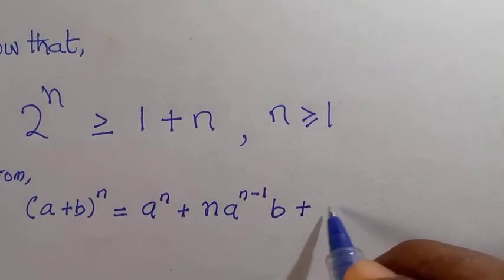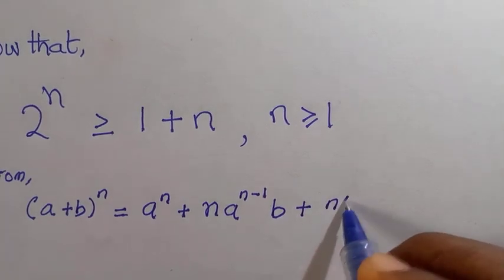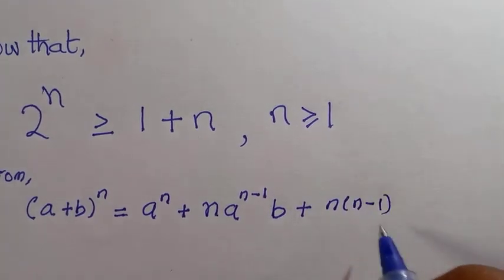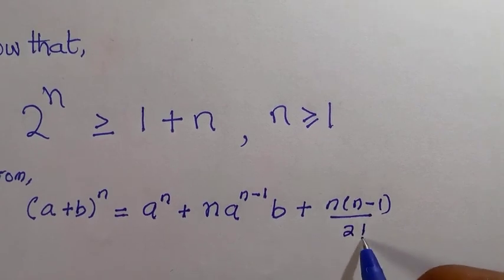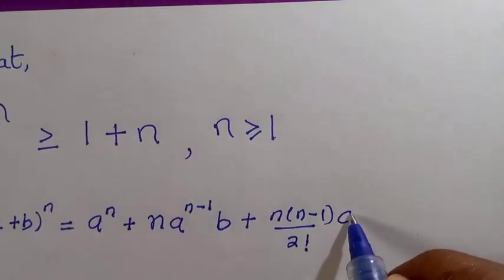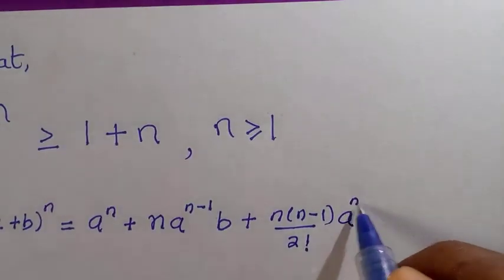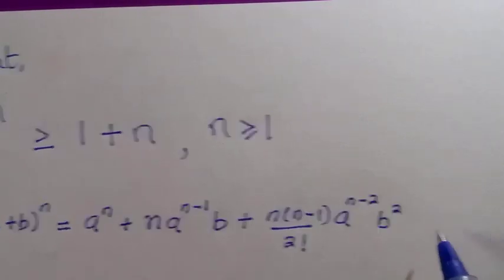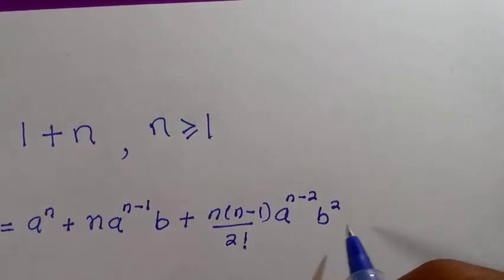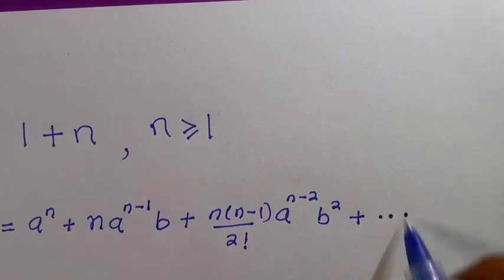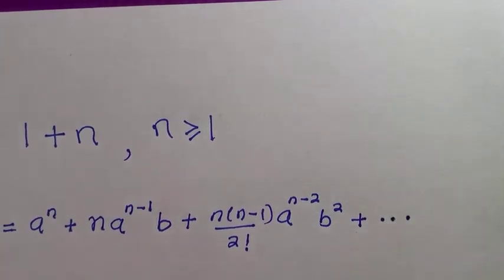plus n bracket n minus 1 divided by 2 factorial, a raised to the power of n minus 2, b raised to the power 2. And this is how this expansion continues till it reaches b raised to the power of n.